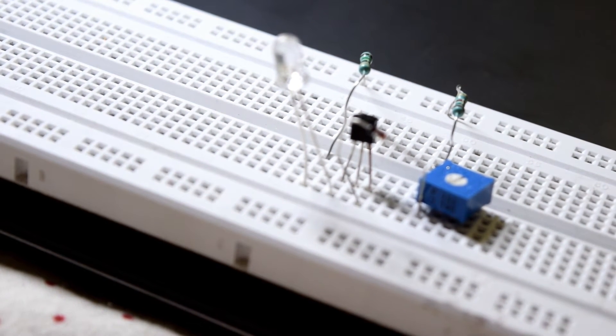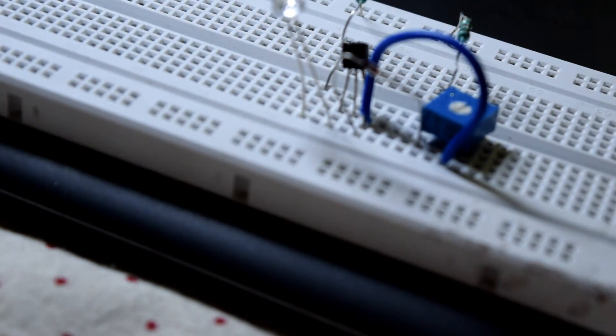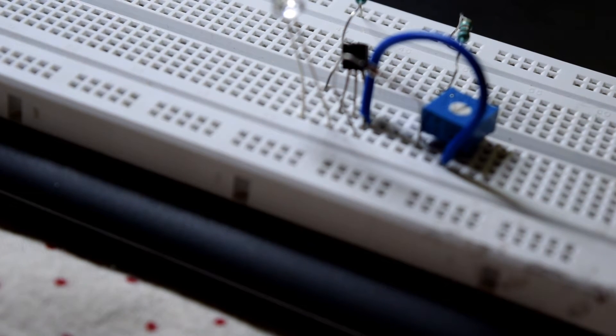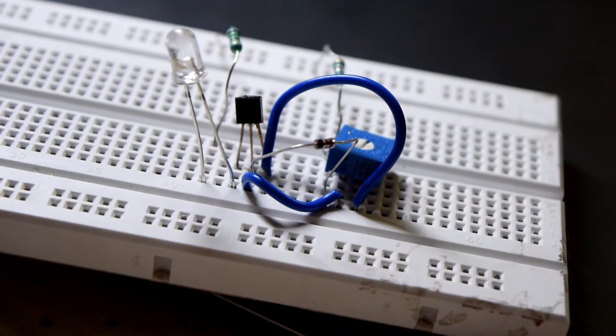The other terminal of the 1K variable resistor should be connected to the negative terminal of the diode, and I will do this using a breadboard connector. Now connect the remaining pin of the resistor to the base of the transistor.